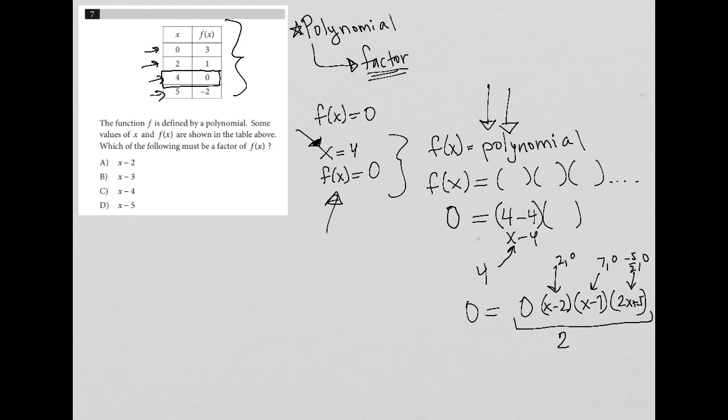If that doesn't make sense to you, please do leave a comment underneath the video, and I'll try to clarify it with an additional video and let you know when I post that. But otherwise, that's the shortcut method to get here. So I've just discovered, basically, that x minus four must be a factor, which tells me that answer choice C is correct.